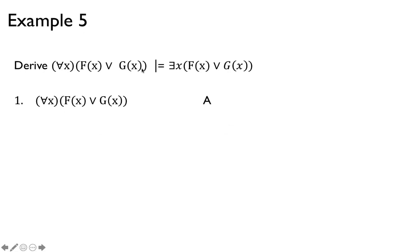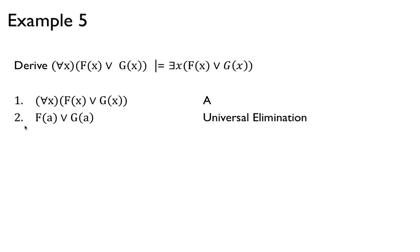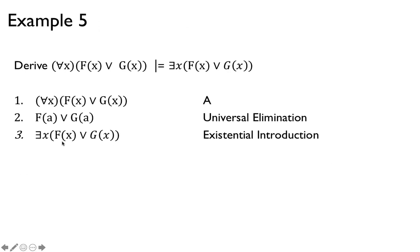For example, given for all x, f of x or g of x, we want to prove there exists x, f of x or g of x. Since this is true for all x, it's true for a by universal elimination: f of a or g of a. Then by existential introduction — the third rule — since a satisfies this property, certainly there exists x, f of x or g of x. In other words, for all is certainly a lot stronger than there exists.